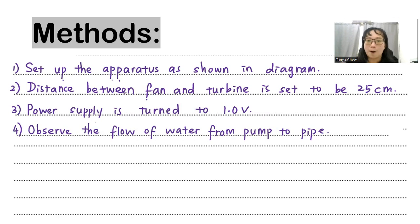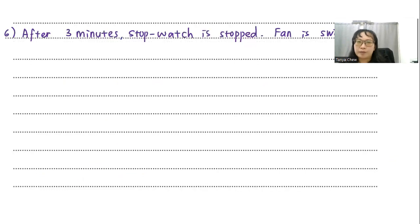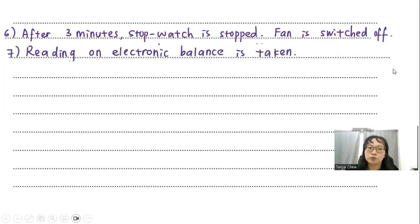And after that, I observe the flow of the water from pump to pipe. And when the water starts leaving the top of the pipe, I have a marker there before I connect the pipe to the flexible light tube. So I have to make sure that I look at the level of the water. So I have to record the rotation of the fan by using a video recorder. And I start my stopwatch immediately. So after 3 minutes, you can suggest any time that you like. Maybe after 5 minutes, 4 minutes, it's up to you. Your choice. After 3 minutes, I stop my stopwatch and the fan is switched off.